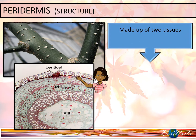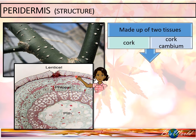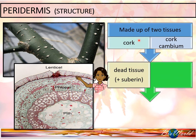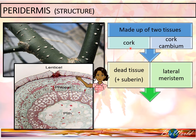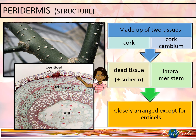The outer layer of the peridermis is made up of dead cells called cork cells, while the inner border is made up of living cells known as the cork cambium. The cork cells are dead because their cell walls are impregnated with suberin. The cork cambium is the lateral meristem that carries out mitosis to produce new cork cells. Most of the cork cells are tightly packed together, but there are spaces where they are loosely arranged, which we call the lenticel. These spaces visible in the diagram are actually the lenticels.